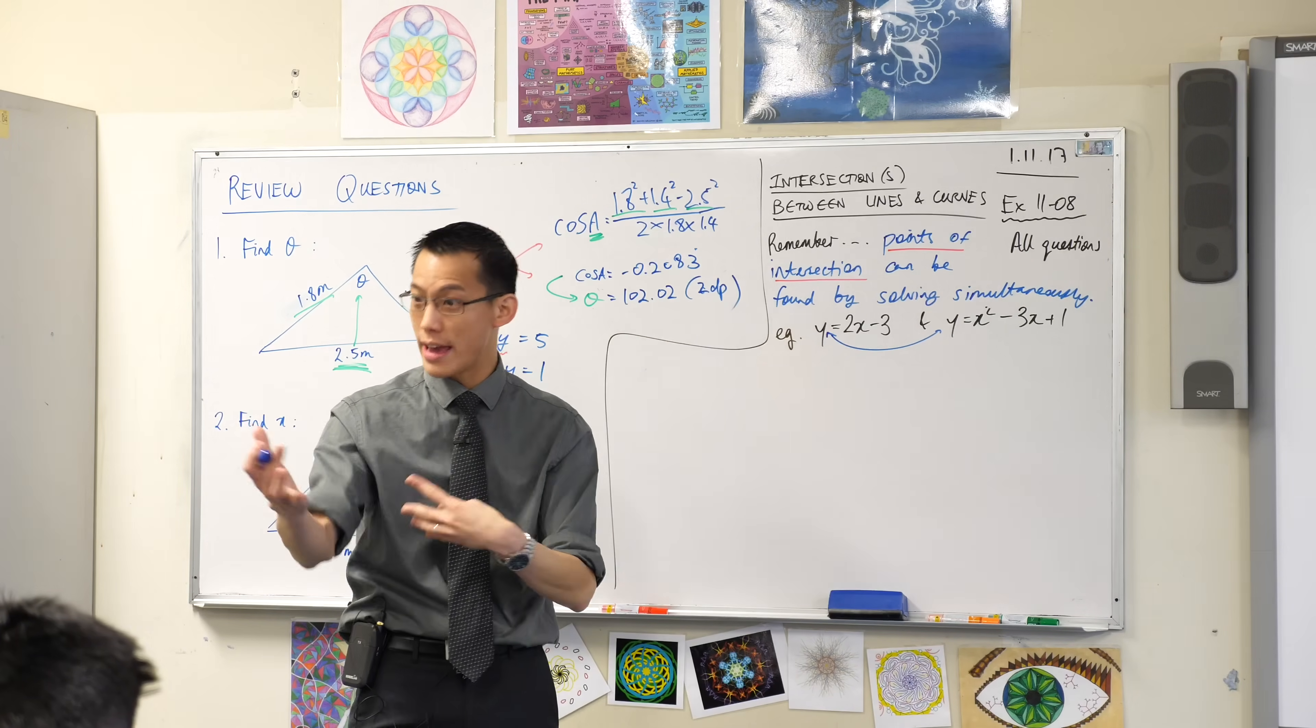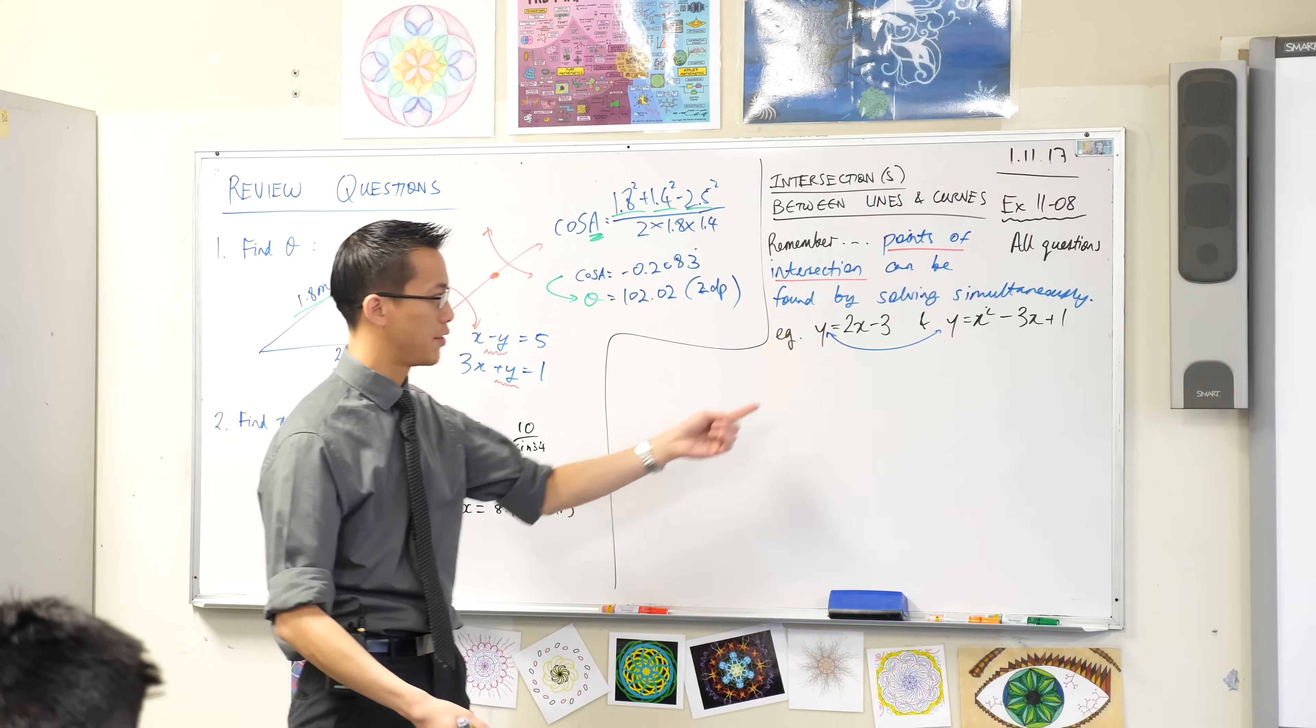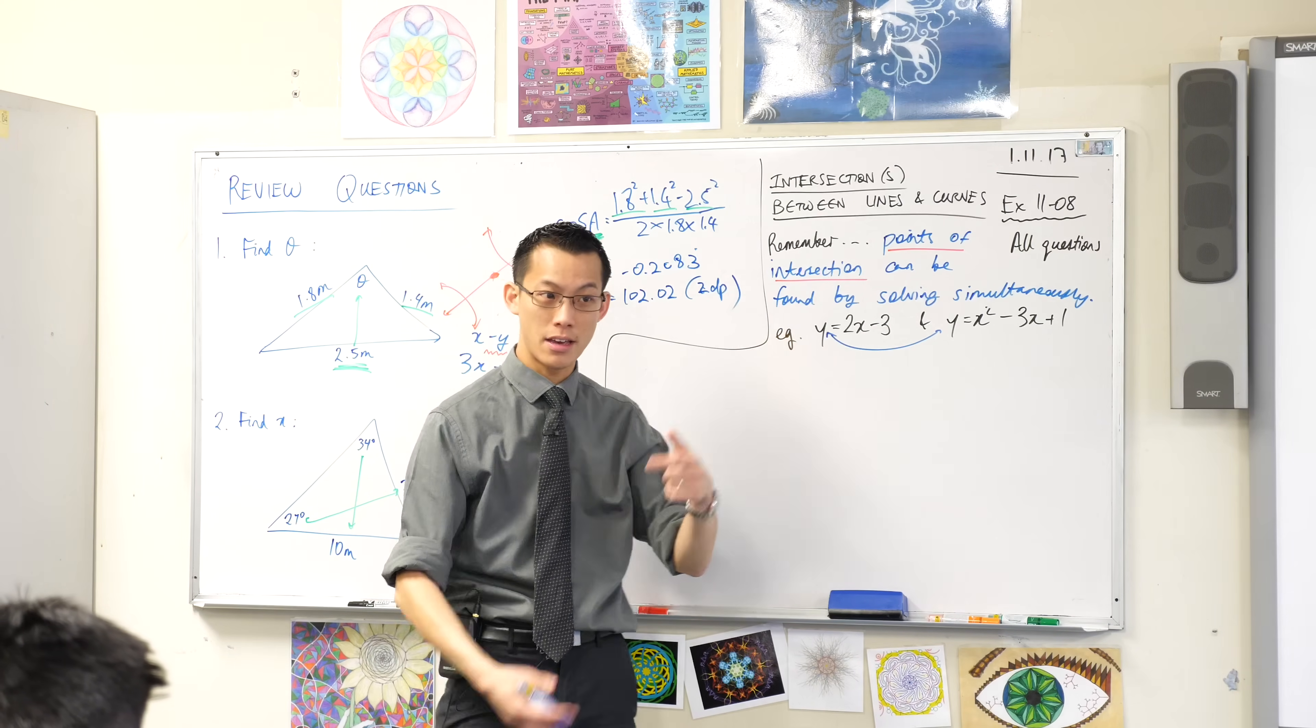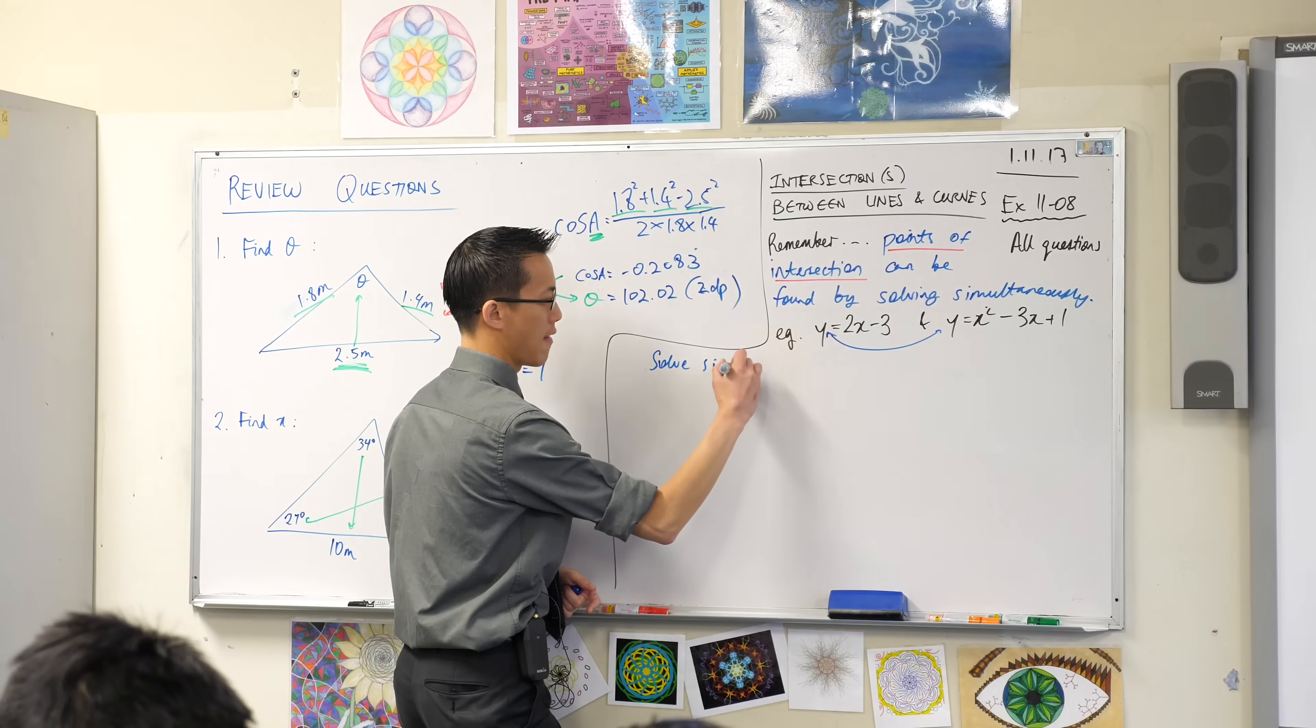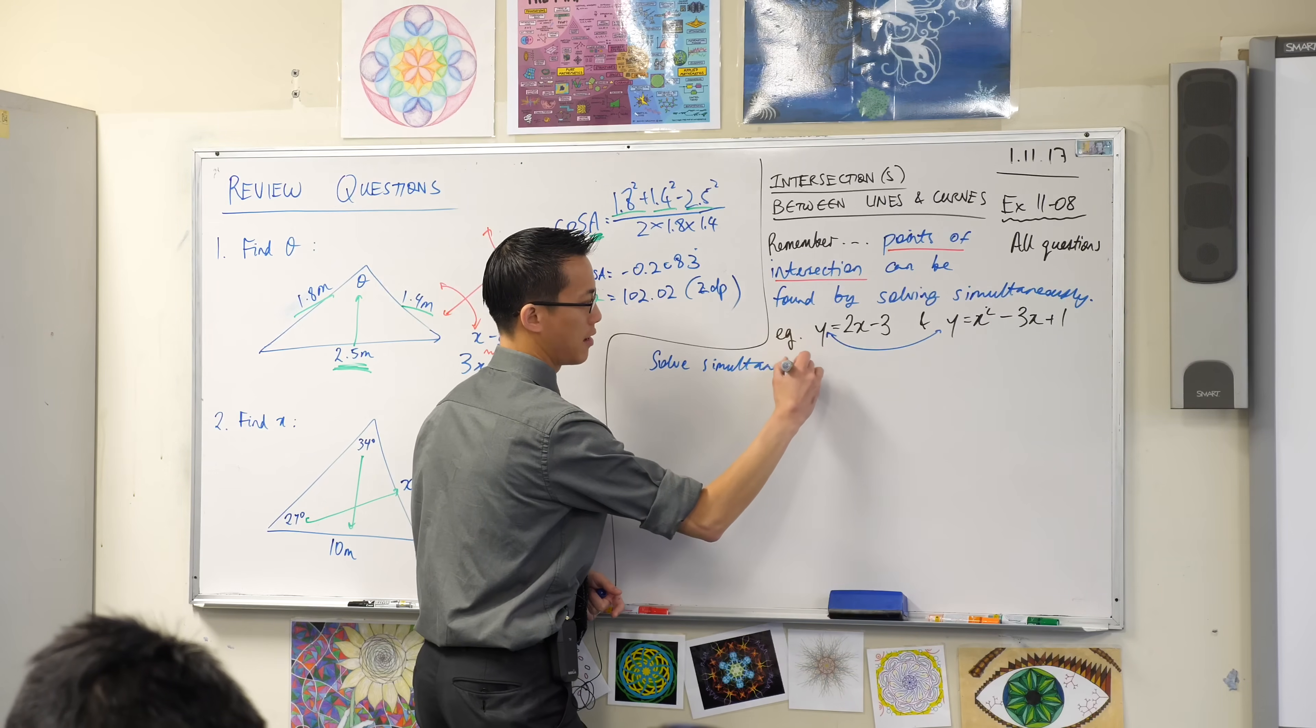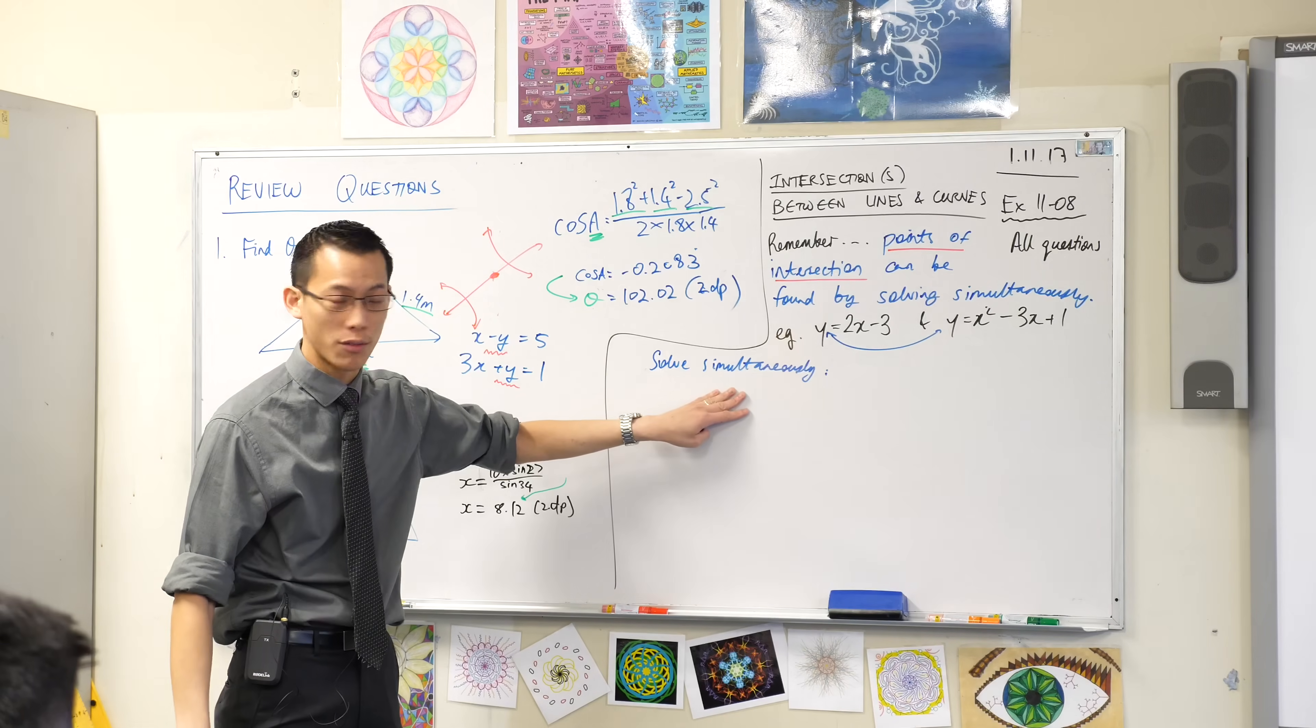You see how I have y equals and y equals in both cases? So one of these y equals I could just swap for say 2x minus 3. So here's how I'm going to do it. I'm going to solve simultaneously. I like to write that down to indicate I'm actually doing something here which I know the meaning of.